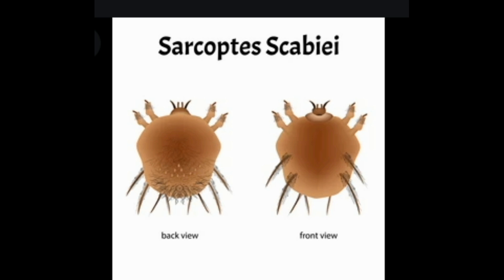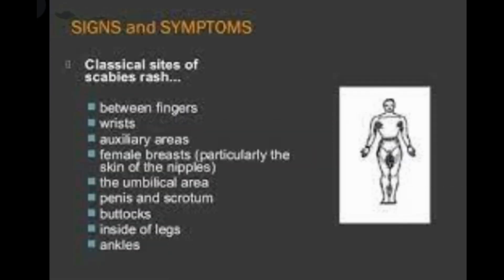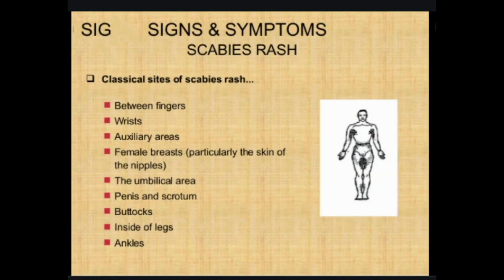Recognizing scabies bites and the distinctive red rash can help you find treatment faster. After the initial exposure to scabies, it can take up to six weeks for symptoms to appear. Symptoms usually develop more quickly in people who've had scabies before. The hallmark symptoms include a rash and intense itching that gets worse at night. Continuous scratching of the infected area can create sores that become infected, and additional treatment with antibiotics may be recommended.